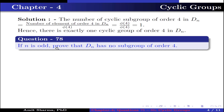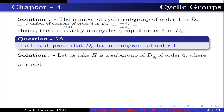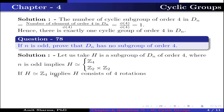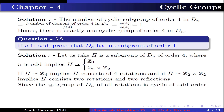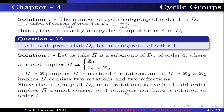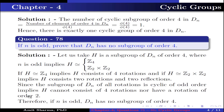Question number 78. If n is odd, prove that Dₙ has no subgroup of order 4. Let H be a subgroup of Dₙ of order 4, where n is odd. Then H is either isomorphic to Z₄ or isomorphic to Z₂ × Z₂. If H ≅ Z₄, it consists of 4 rotations; if H ≅ Z₂ × Z₂, it consists of 2 rotations and 2 reflections. Since the subgroup of all rotations in Dₙ is cyclic of odd order, H cannot consist of 4 rotations nor have a rotation of order 2. Therefore, if n is odd, Dₙ has no subgroup of order 4.